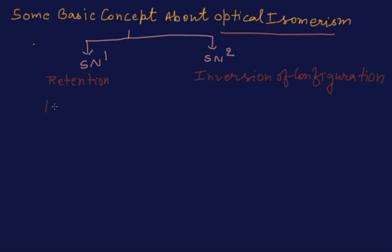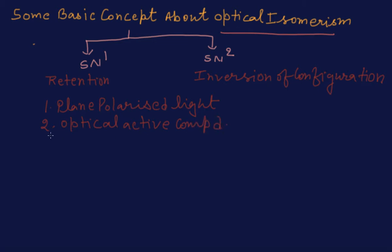First we have to understand what is plane polarized light. Number two is what is optical activity or what are the optically active compounds. Number three we have to discuss about enantiomers, and number four we have to discuss about diastereomers. To understand this concept, we must first understand what is plane polarized light.